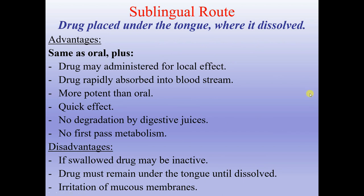Sublingual route: the drug is placed under the tongue where it dissolves. Advantages are the same as oral, plus the drug may be administered for local effect, is rapidly absorbed into the bloodstream, is more potent than oral, has a quick effect, no degradation by digestive juices, and no first-pass metabolism. Disadvantages: if swallowed the drug may be inactive, the drug must remain under the tongue until dissolved, and irritation of mucous membranes.